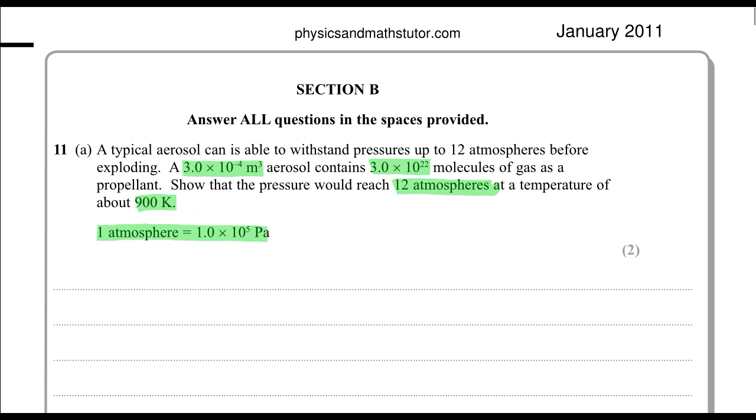Here we are dealing with a kind of gas and we are given the properties of volume, pressure, temperature, and also the number of particles in there. This requires us to look at the ideal gas equation since temperature, pressure, and volume are involved, which is PV equals NKT. Here P is the pressure, V is the volume, T is the temperature, N is the number of particles, and K is Boltzmann constant.